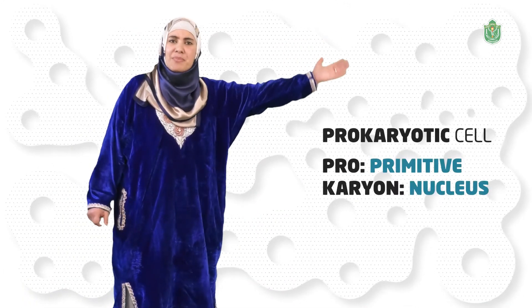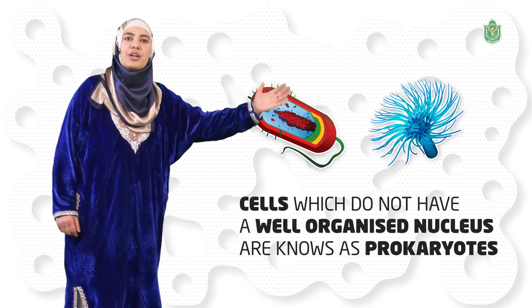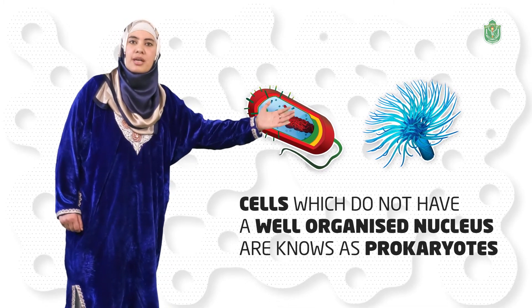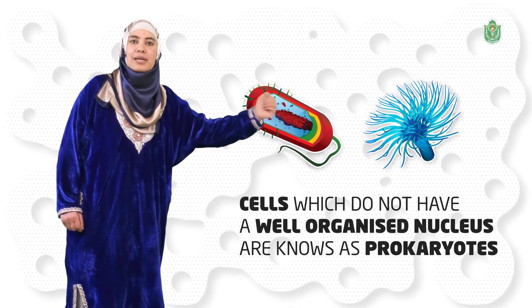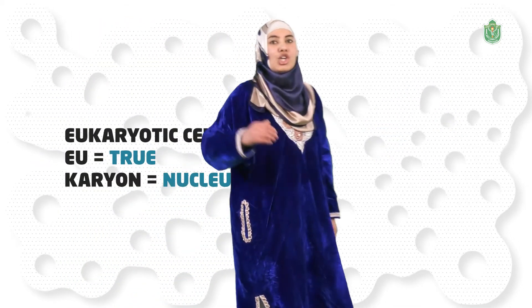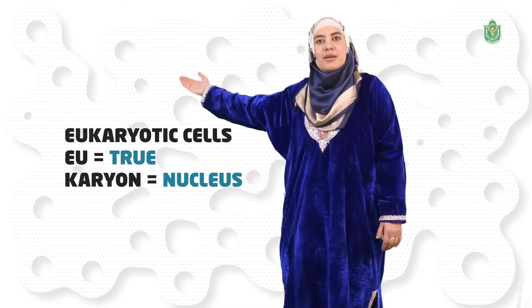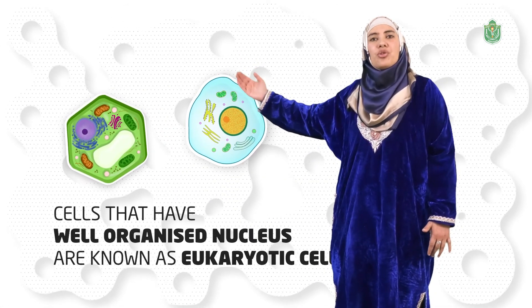Do you know anything about prokaryotic and eukaryotic cells? Prokaryotic cells: 'pro' means primitive, 'karyon' means nucleus. Those cells which do not have a well-organized nucleus are known as prokaryotes. Examples of prokaryotic cells are bacteria and blue-green algae. Eukaryotic cells: 'eu' means true, 'karyon' means nucleus. Those cells which have a well-organized nucleus are known as eukaryotic cells. Most of the plants and animals have eukaryotic cells.